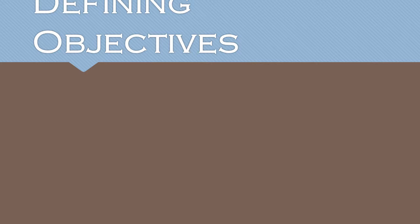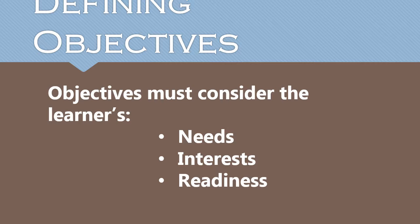Defining objectives. Instruction begins with a definition of instructional objectives that consider the learner's needs, the learner's interests, and the learner's readiness. All the elements are dependent on the learner. Hence, when we define our objectives, we must consider the learner's needs — like what do they need to know or in what aspects do they need help. Second, we must consider their interests — what piques their attention, what gets them going. And last, we must also consider their readiness, whether they are ready or not to learn the next lesson.